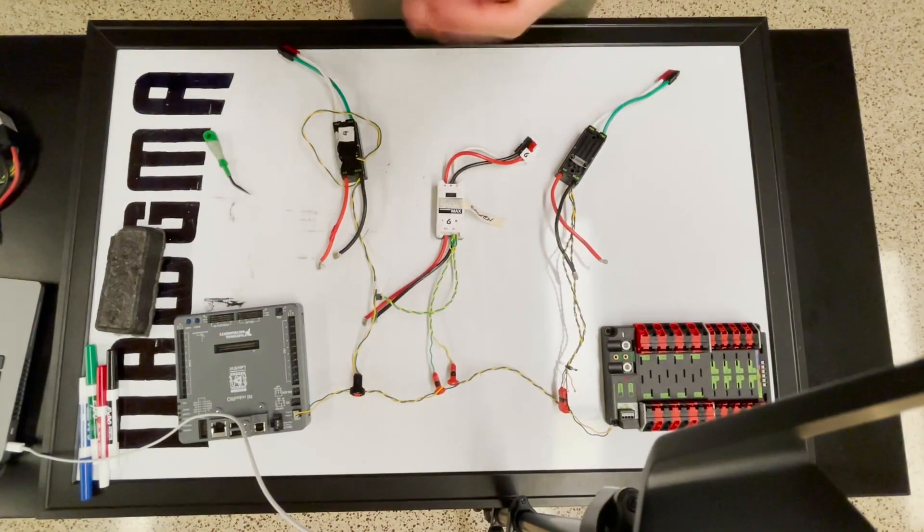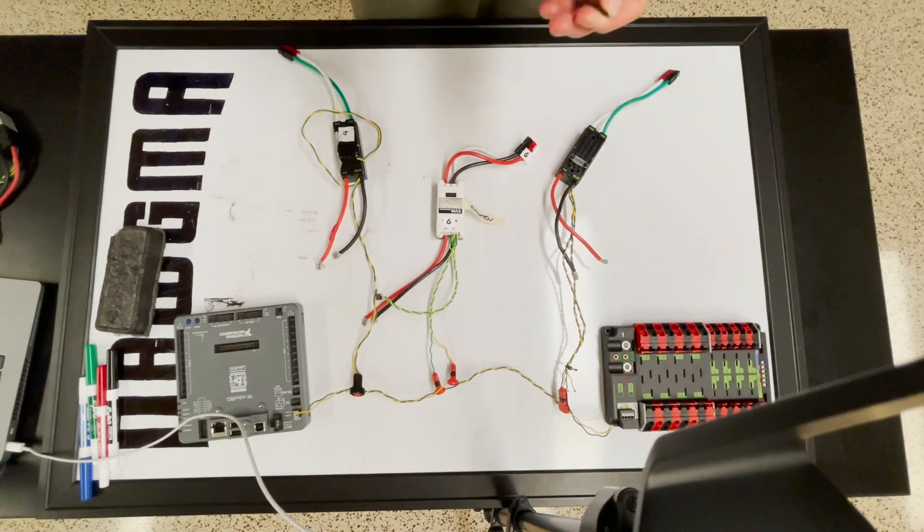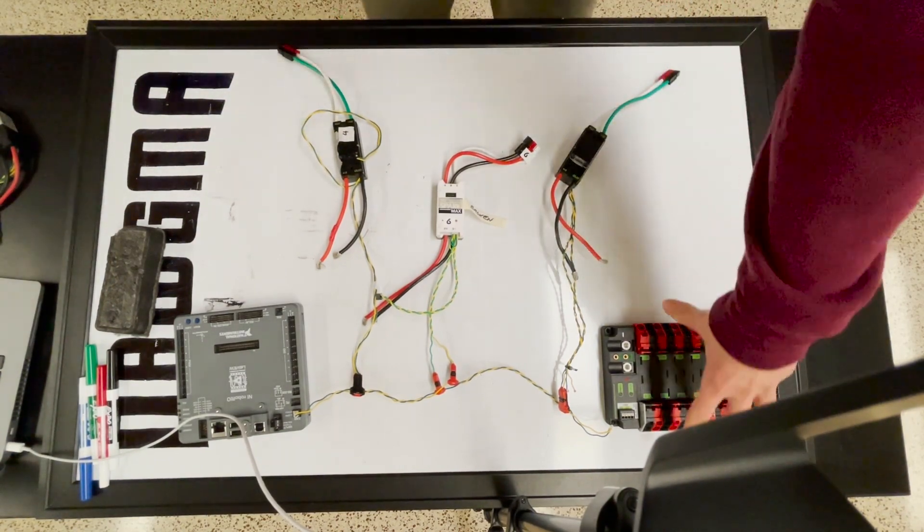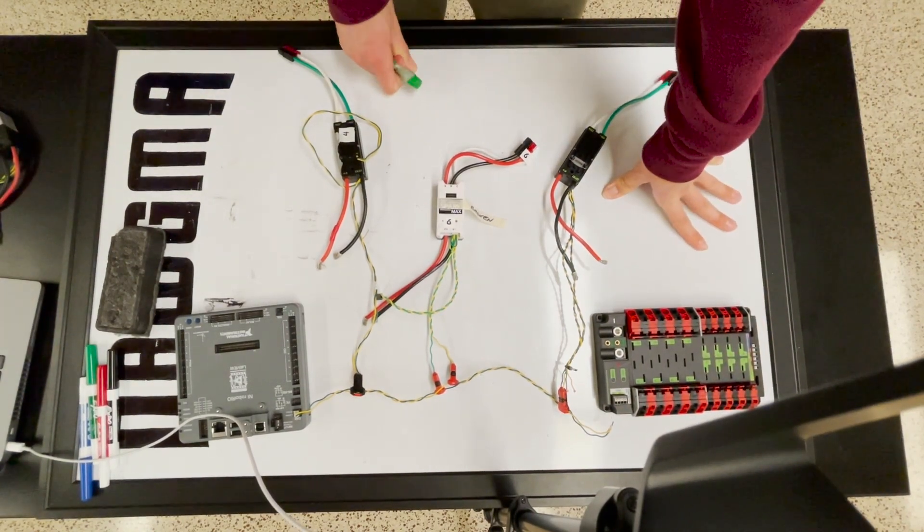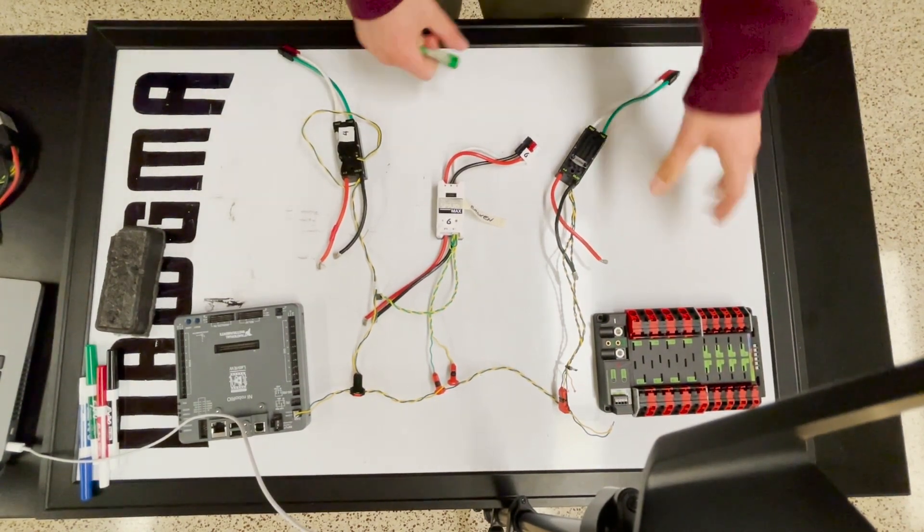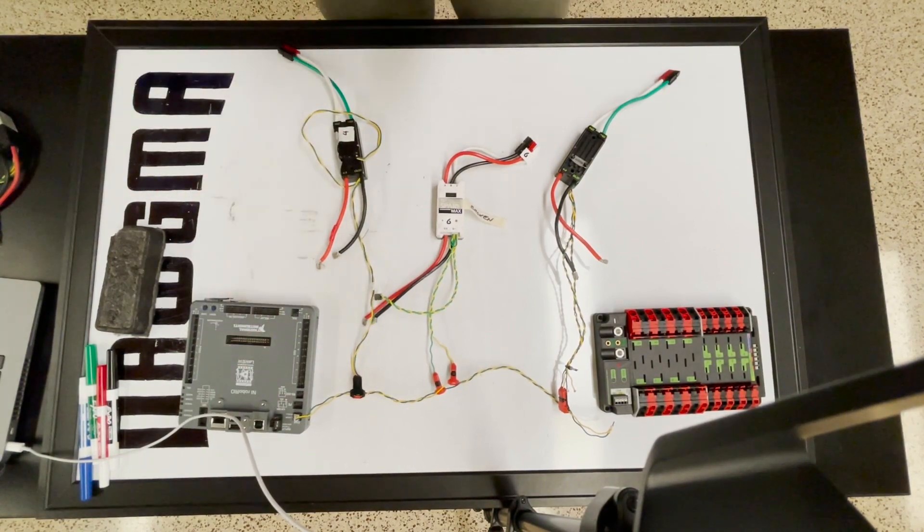Okay, so now here I have an example of a CAN bus that we would use on our robot. This is just kind of a bare bones setup. On one end here, we have our PDP, Power Distribution Panel, from CTRE. If you were using the REV product, you'd be using the Power Distribution Hub. On the other end here, we have a RoboRio from National Instruments.